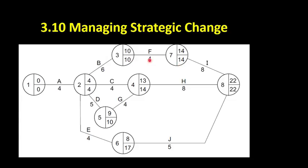Let's just have a look at another example — activity C. The earliest that we could start activity C is week four. The latest that we could finish activity C is week 14. So 14 minus four is 10. Activity C has to start in week 10, but we could start it in week four. So that gives us six weeks to play with between weeks four and week 10 when we could potentially start activity C.